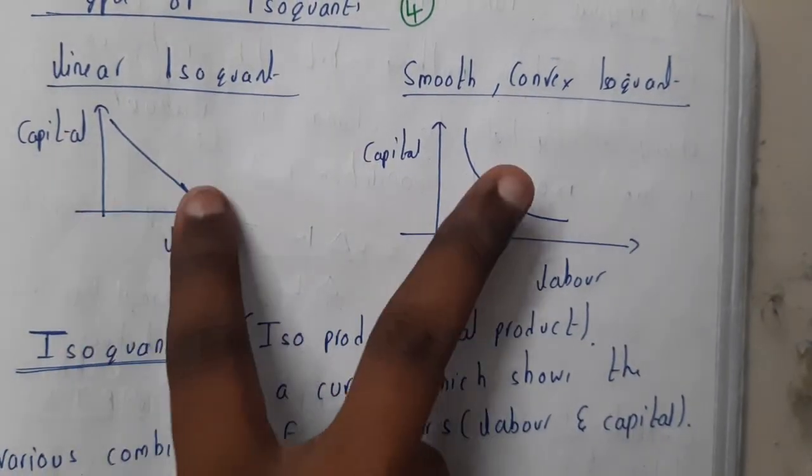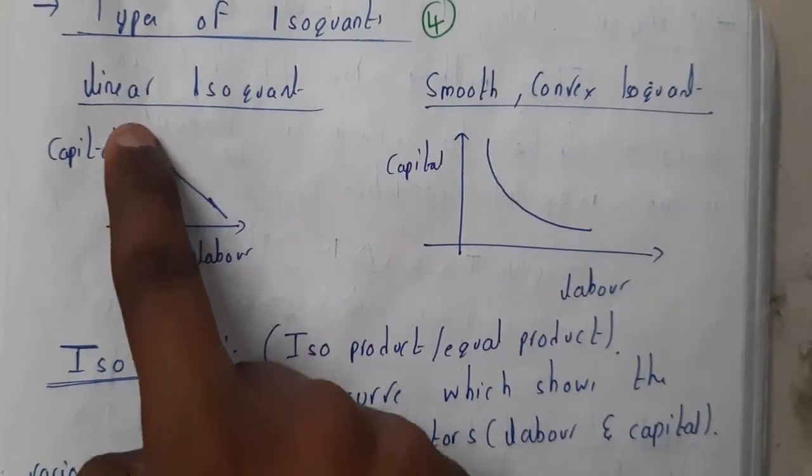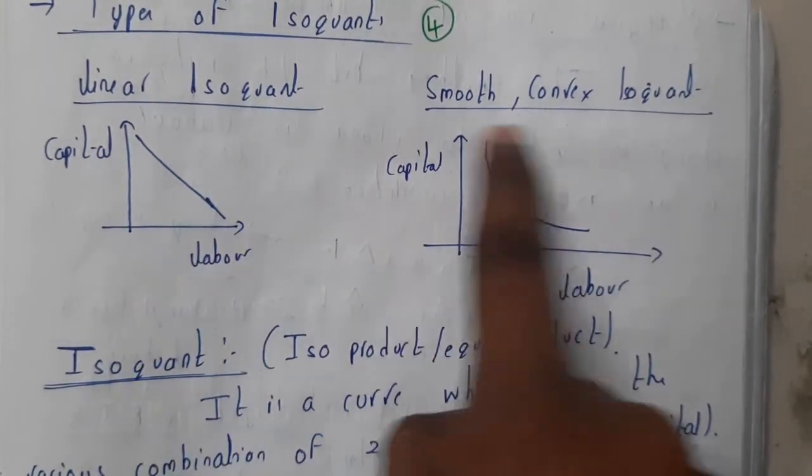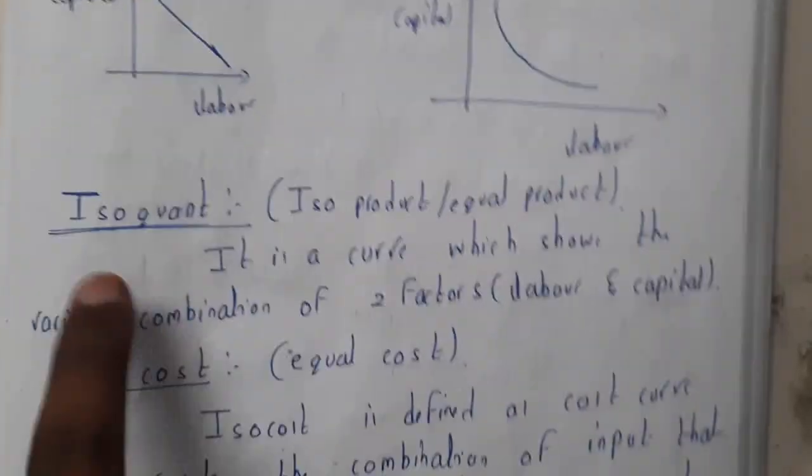The isoquant curves can be in these two ways. Linear means in this way, here also the values will be constant according to this. And smooth curve or convex curve will be in this way.